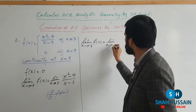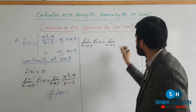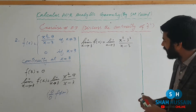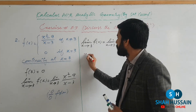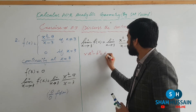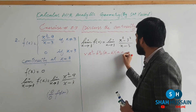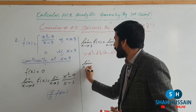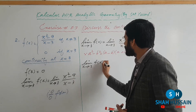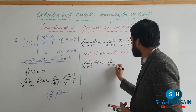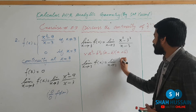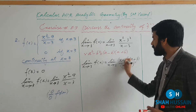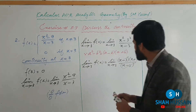Left side remains the same: limit as x approaches 3 of f(x) = limit as x approaches 3 of (x² - 3²)/(x - 3). Using the basic formula a² - b² = (a - b)(a + b), we simplify the right hand side to: limit as x approaches 3 of (x - 3)(x + 3)/(x - 3).